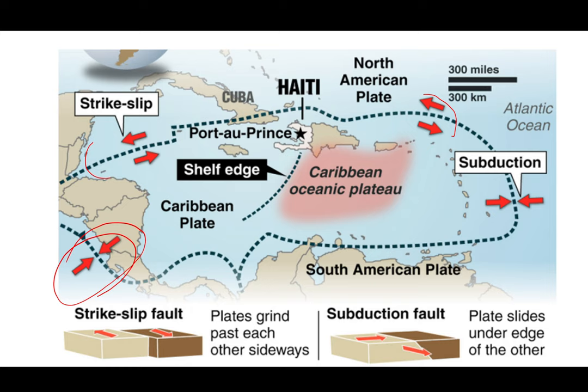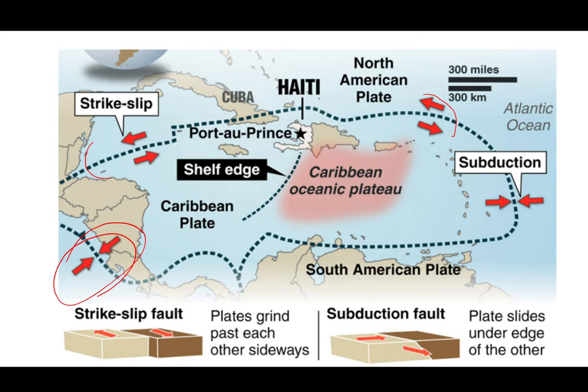To the southeast of the Caribbean plate, we have a convergent or destructive plate margin creating large hilly and mountainous areas within Central America, dividing the Pacific from the Caribbean Sea. To the eastern part of the Caribbean, there is a subduction zone — another type of convergent plate margin — which creates volcanic islands. The Lesser Antilles is produced by this volcanic activity sparked by the subduction zone.